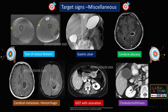Miscellaneous target signs include: tear of rectus femoris showing a target pattern; gastric ulcer showing target pattern; cerebral abscess showing target pattern; cerebral or hemorrhagic metastases showing blooming on GRE with target pattern; GIST with ulceration showing target pattern; and choledocholithiasis where a hyperdense bile stone surrounded by hypodense bile gives a target sign. Other target signs can be seen in subacute hematoma, Lyme's disease, and sonographic target sign in neurofibromas or schwannomas.